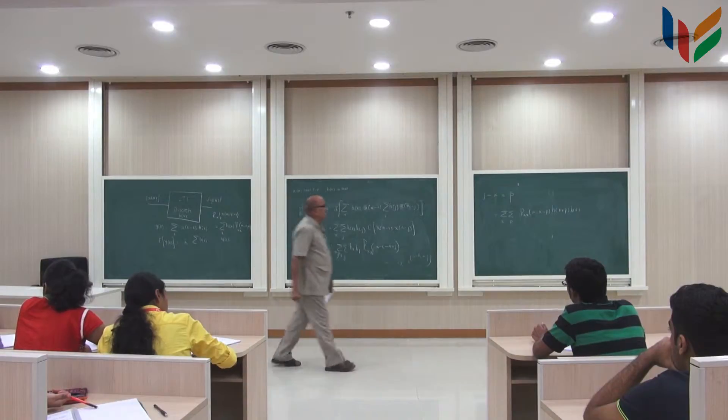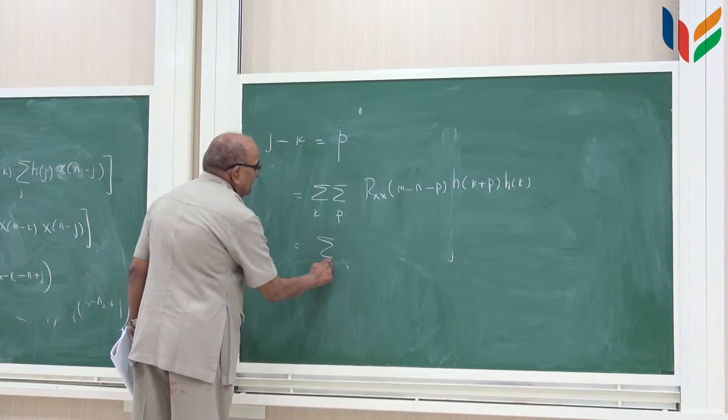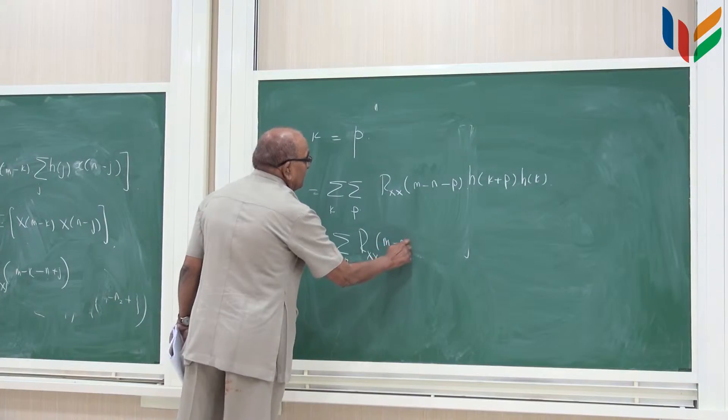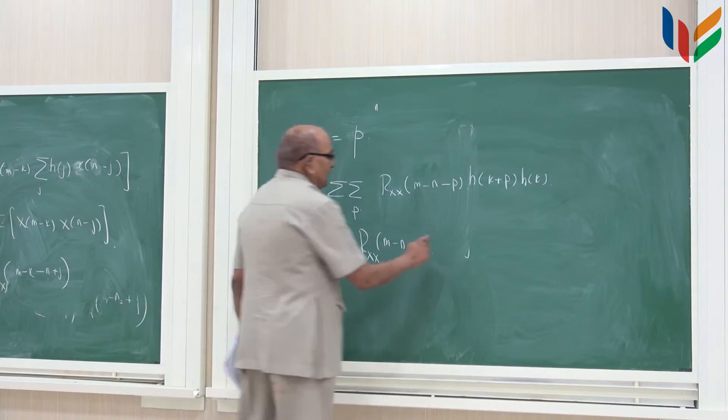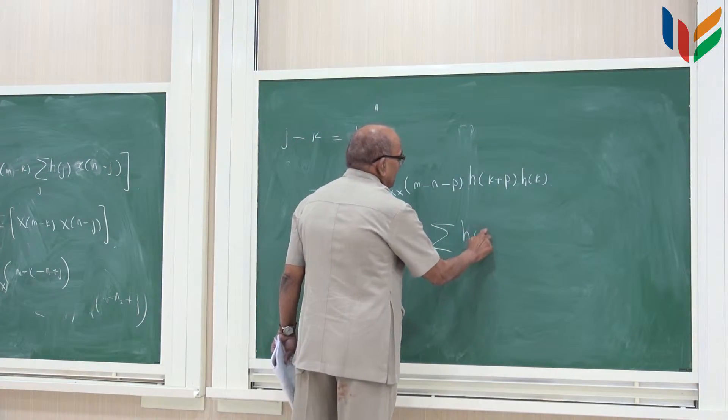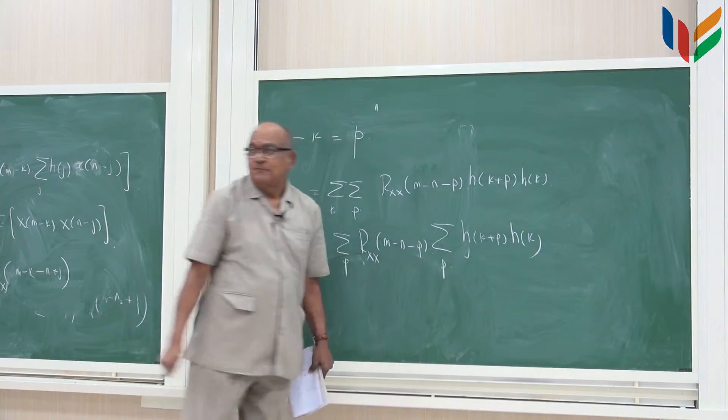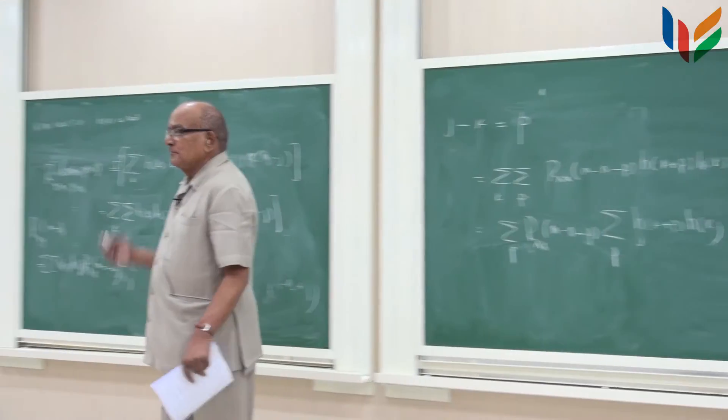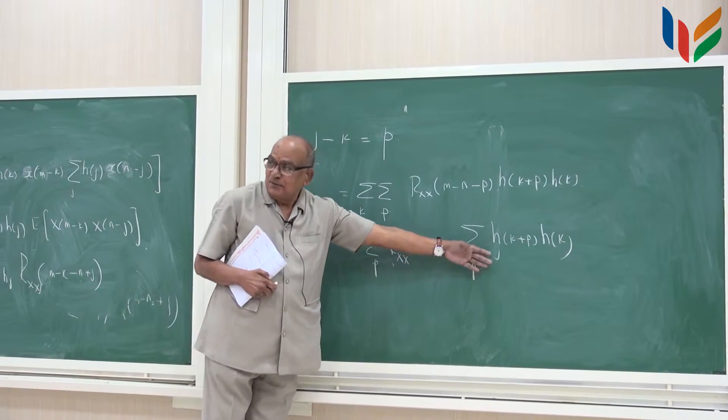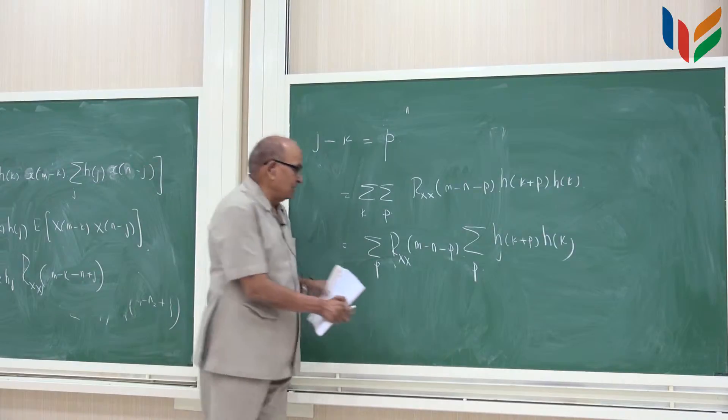So which I can write it as sigma p rxx m minus n minus p into sigma p h k plus p h k. First I do summation on p, you end up into k, something on k, then this k is brought here and summation on. I am sorry, this is k.